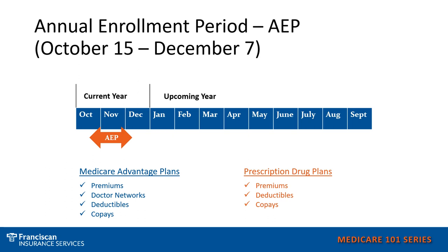And if you have a Medicare Supplement with a prescription drug plan, then you would still want to check your premiums, co-pays, deductibles, and the tiers of your medicines. This is also the time where if you decided you wanted to change from a Medicare Supplement to a Medicare Advantage plan, you could do that during this time. You could also potentially change from a Medicare Advantage plan to a Medicare Supplement at this time. However, you may be subject to health underwriting rules to qualify for a Medicare Supplement.